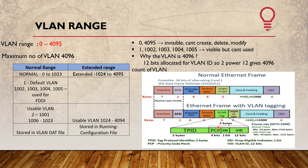The VLAN tag is 4 bytes in size and contains a 12-bit VLAN ID field. Since the VLAN ID is 12 bits, 2 to the power of 12 gives 4096, which is the maximum number of VLANs supported. This is why the maximum VLAN count is 4096.